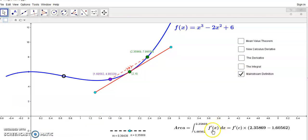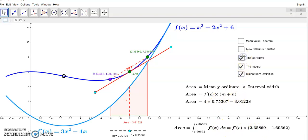And of course, the mainstream definition is just given by this. It's just the integral from 1.6 to 2.3 of the derivative function, but it turns out to be the same as what I have here. So, it turns out to be exactly the same as the new calculus definition for integral, which is just f prime of c times m plus n.